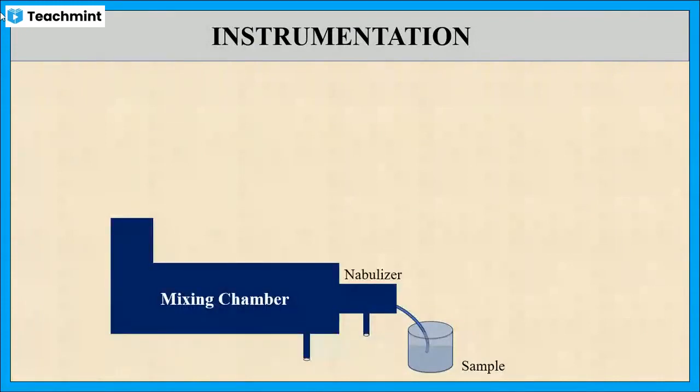Now let us see the instrumentation and working of flame photometer. The analyte sample is injected to the flame photometer through the nebulizer. Air is applied to the nebulizer in order to suck the sample. Fuel like LPG is passed through to the mixing chamber where fuel and sample will be mixed together.